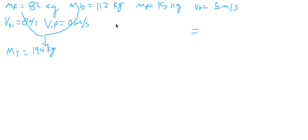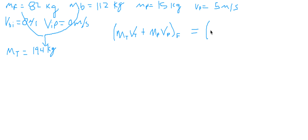We write our equation: PF equals PI. The total mass of the man and the boat times the velocity of the boat, plus the mass of the package times the velocity of the package, equals the initial momentum. Since the initial velocity is zero for both, the entire right side of the equation is zero.